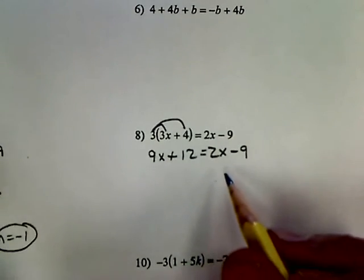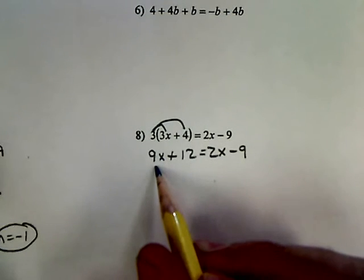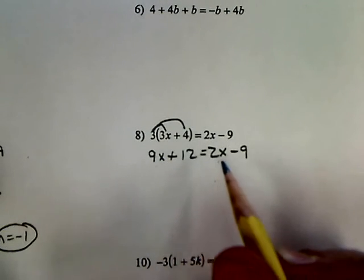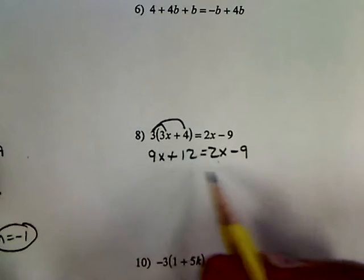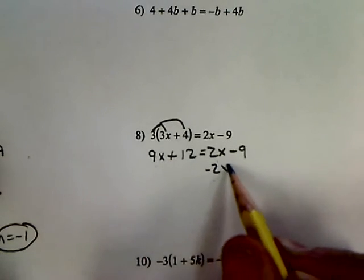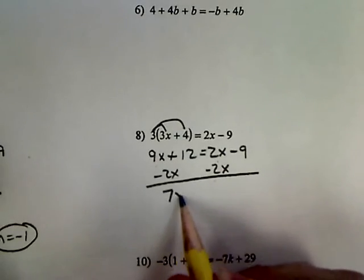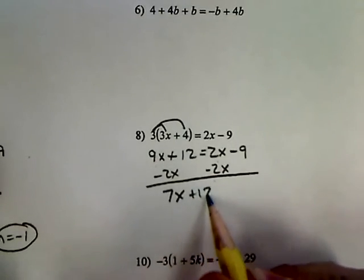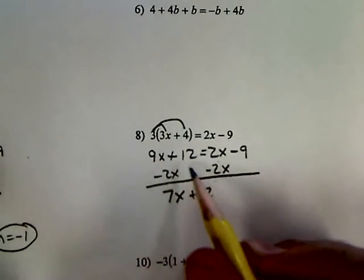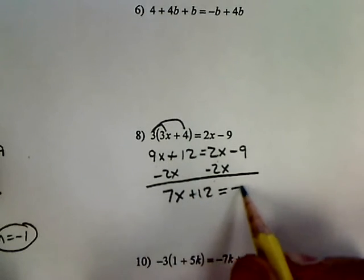Get all my x's on one side. I could subtract 9x or I could subtract 2x. I usually do the smaller numbers so I have a positive x. It doesn't matter. 7x plus 12. I'm just combining the like terms. Equals negative 9.